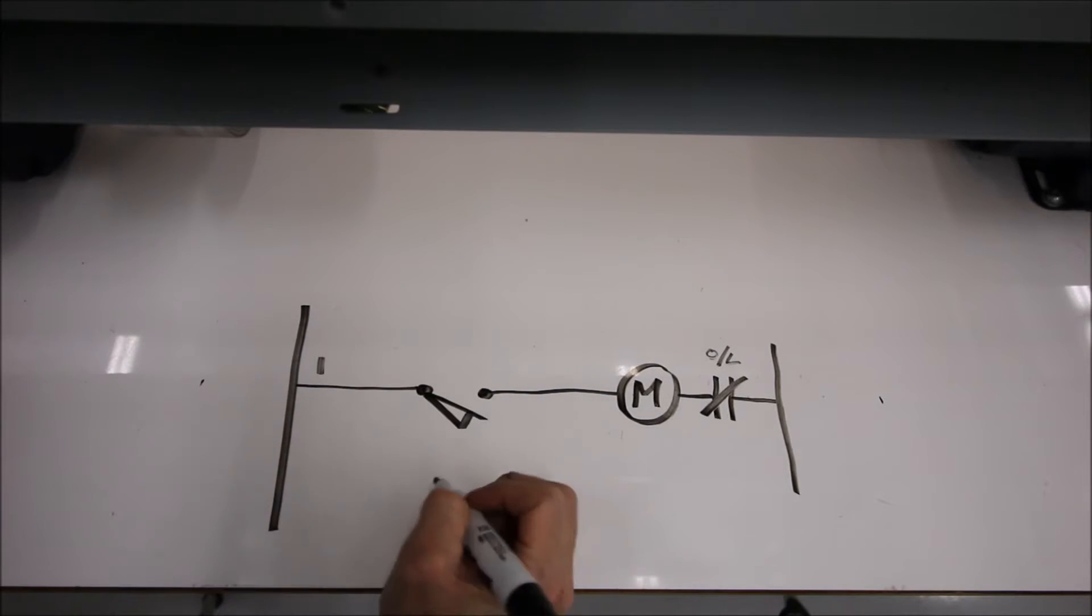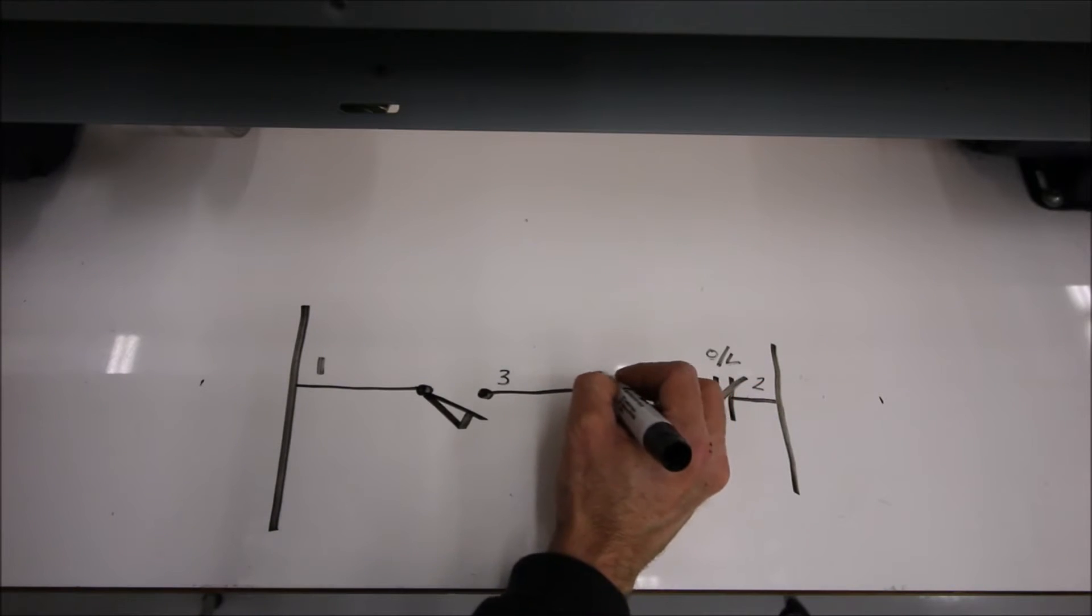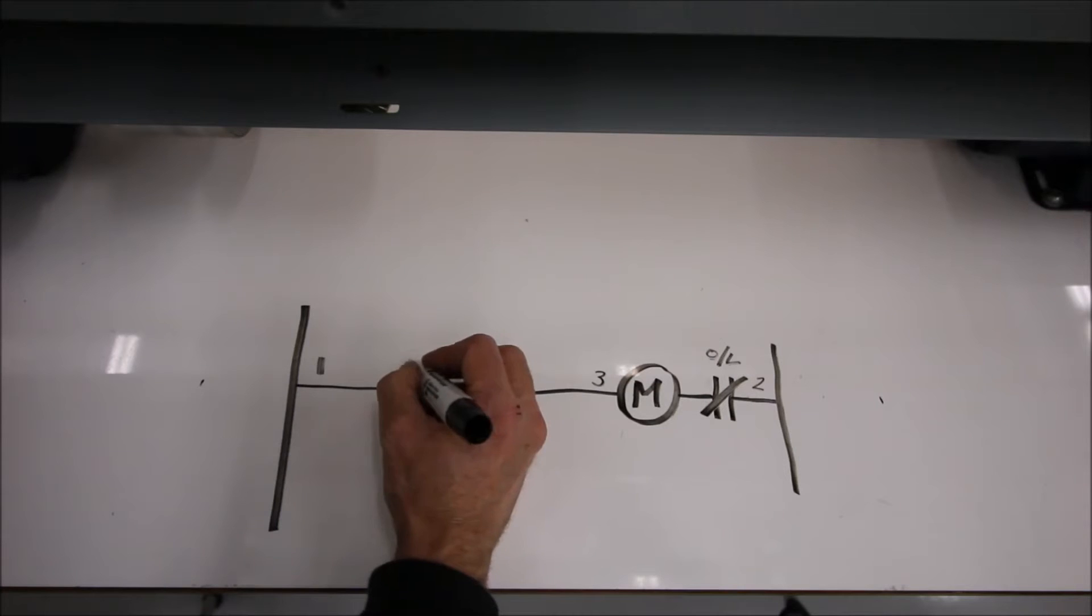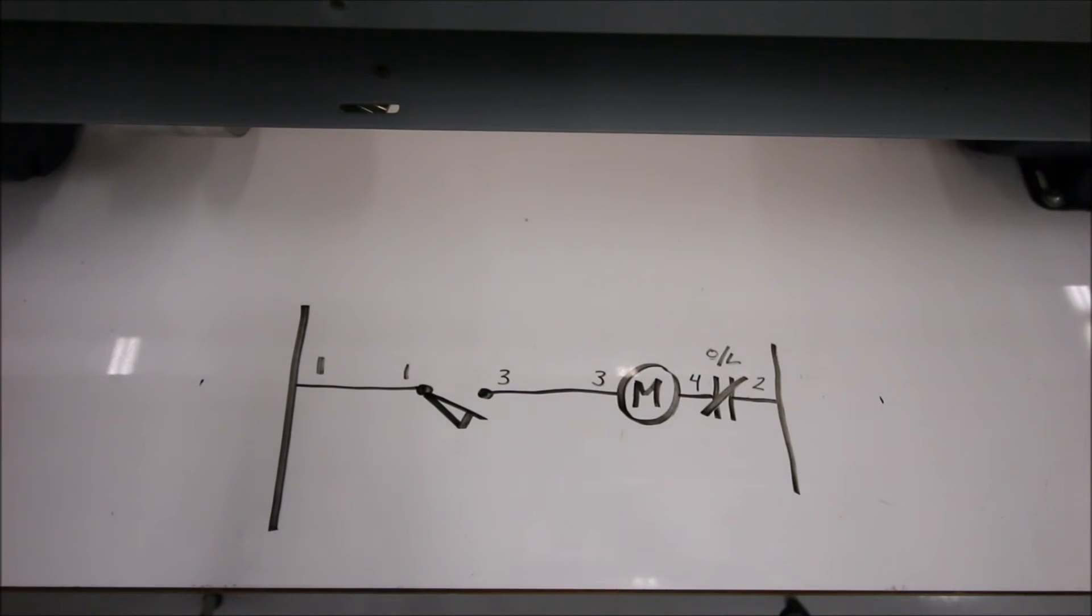If we're going to do wiring numbers, then this guy will be one, our return is going to be two, this guy is going to be three, three one over here, and then don't forget this little jumper right here for wire number four.